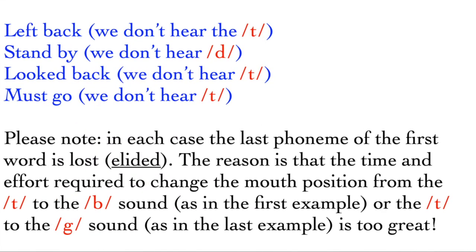For example, 'left back' - we don't hear the T. 'Stand by' - we don't hear the D. 'Look back' - we don't hear the T from 'looked'. 'Must go' - we don't hear the T. Please note that in each case the last phoneme of the first word is lost or elided, and the reason is that the time and effort required to change the mouth position from T to the B sound, as in the first example, or the T to the G sound, as in the last example, is simply too great.